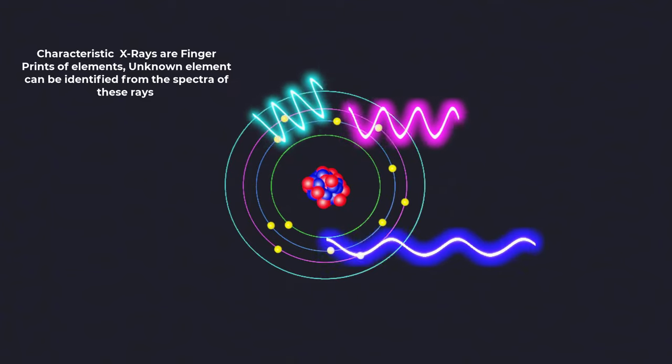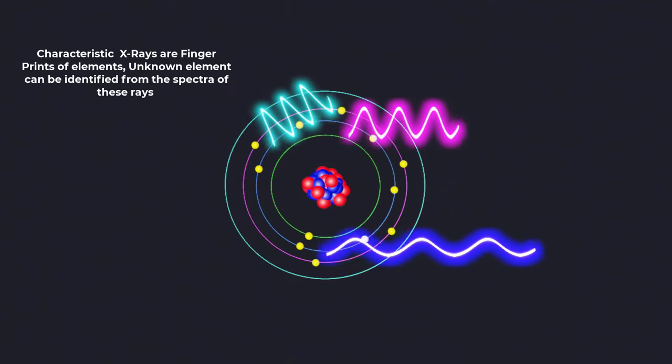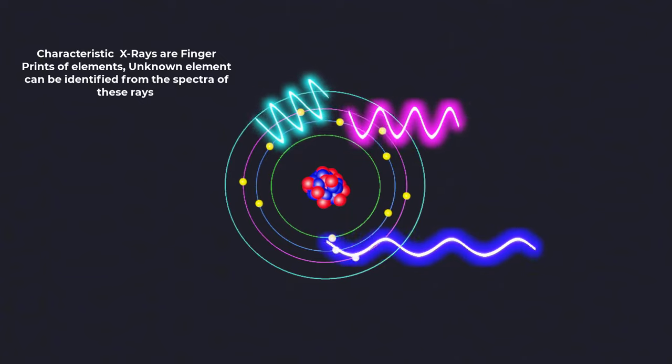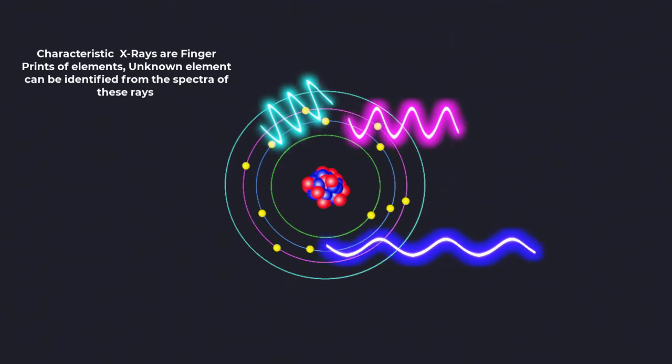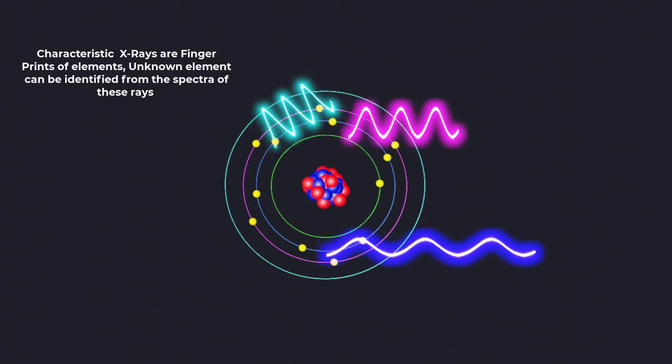The emitted wavelengths of these X-rays are unique to each element. Therefore, they are called characteristic X-rays because they serve as fingerprints for identifying the elements present in a sample.